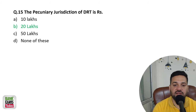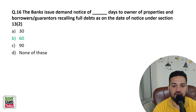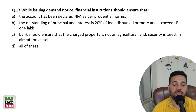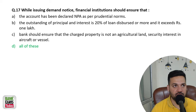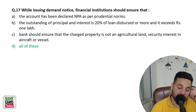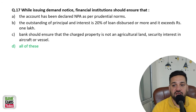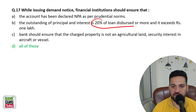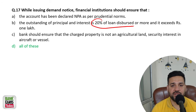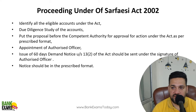The pecuniary jurisdiction of DRT is 20 lakh rupees. Banks issue a demand notice of 60 days — repeated again in exams. While issuing a demand notice, financial institutions must ensure: at least 1 lakh rupees interest has been paid, and if less than 20% is outstanding, SARFAESI cannot be implemented. The outstanding of principal and interest must be at least 20% of the loan disbursed.